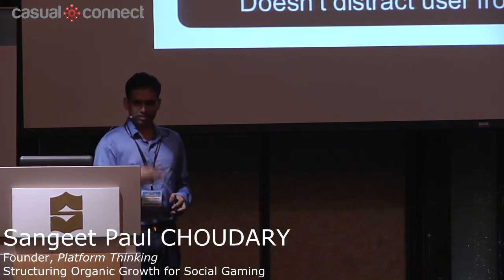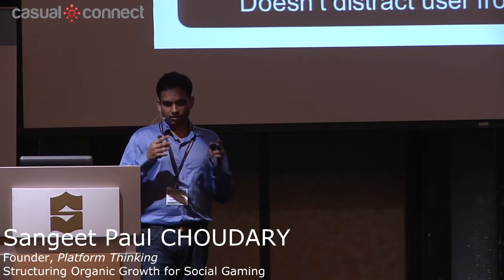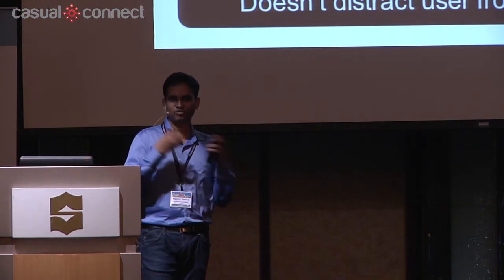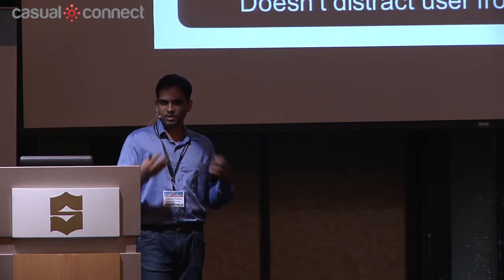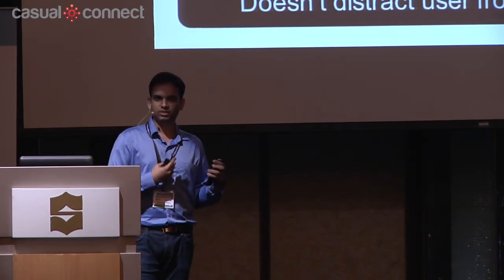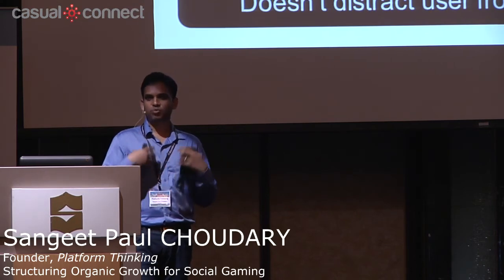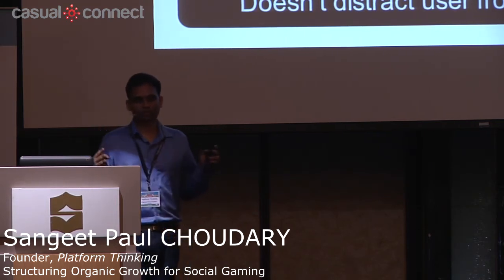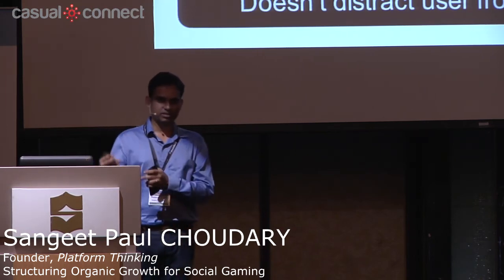The third reason is fortune — inorganic incentives: spread this and you get new weapons or advance to the next level. Of all three, the only one that is really organic is the fun part, because the only time you can really expect users to repeatedly spread the word is if doing so gives the user greater value. A classic example is Instagram — one of the most viral products we've ever had. Instagram has such high virality because spreading a photo onto your Facebook feed creates a conversation that makes it more useful for you. Contrast that with a game invite, which is just irrelevant.